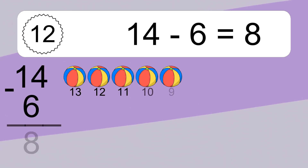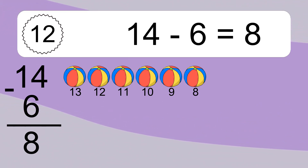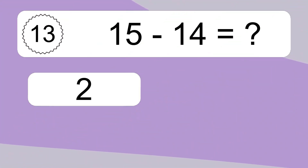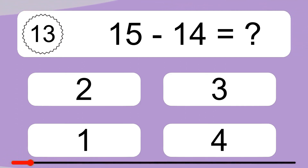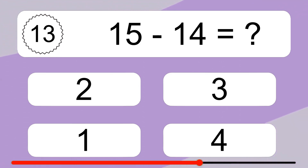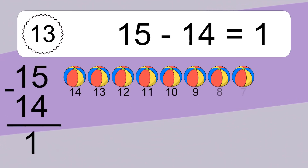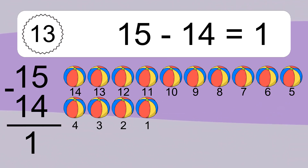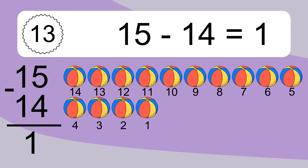14 minus 6 equals what? 14 minus 6 equals 8. Let's count it: 13, 12, 11, 10, 9, 8. 15 minus 14 equals what? 15 minus 14 equals 1. Let's count it: 14, 13, 12, 11, 10, 9, 8, 7, 6, 5, 4, 3, 2, 1.